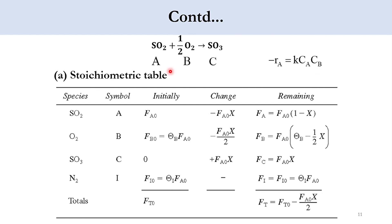First, we need to build the stoichiometric table. According to species: SO2, oxygen, SO3, and nitrogen are represented as symbols A, B, C, and I respectively. Nitrogen is inert in the system. SO2 and O2 are the reactants, while SO3 is the product.